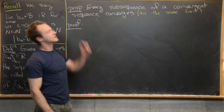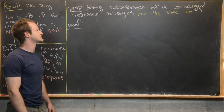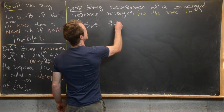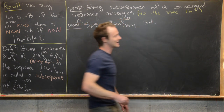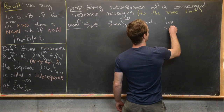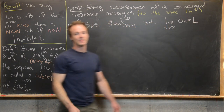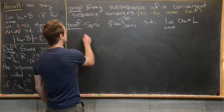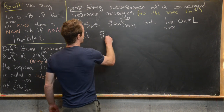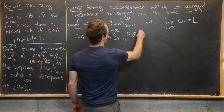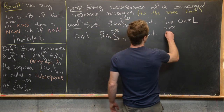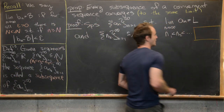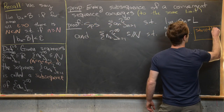Our first result is that every subsequence of a convergent sequence also converges, and converges to the same limit. Let's set up the proof. Suppose we have a sequence a_n (n from 1 to infinity) such that the limit as n goes to infinity of a_n equals L. We introduce an increasing sequence of natural numbers n_k (k from 1 to infinity), with n_1 < n_2 < n_3 and so on — in other words, strictly increasing.